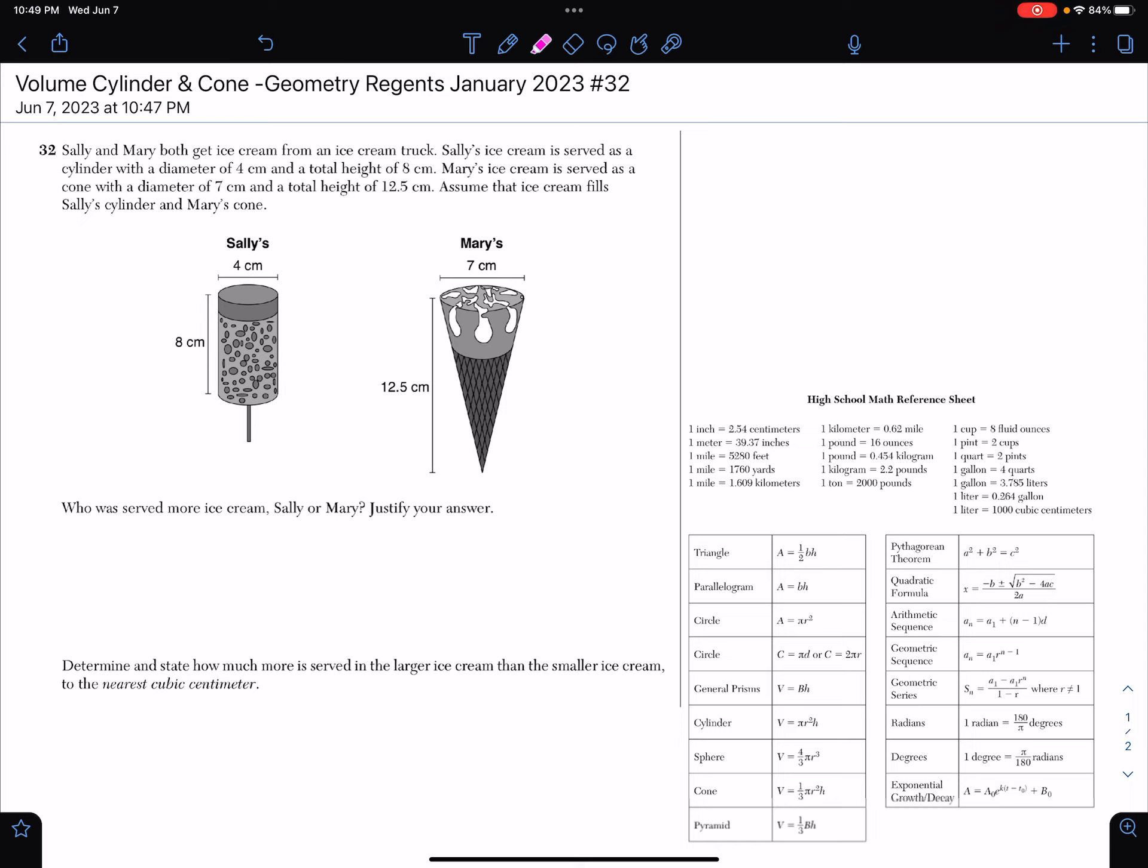Sally and Mary both get ice cream from an ice cream truck. Sally's ice cream is served as a cylinder with a diameter of 4 centimeters and a total height of 8 centimeters. Mary's ice cream is served as a cone with a diameter of 7 centimeters and a total height of 12.5 centimeters.